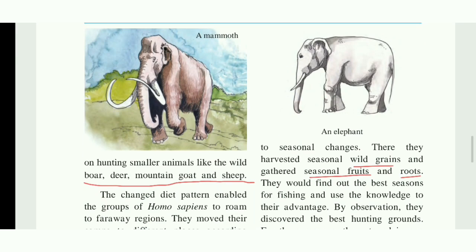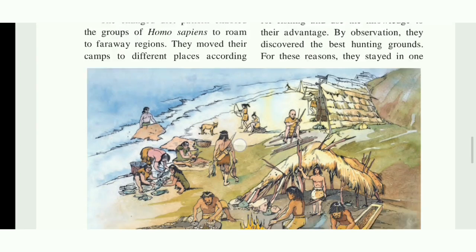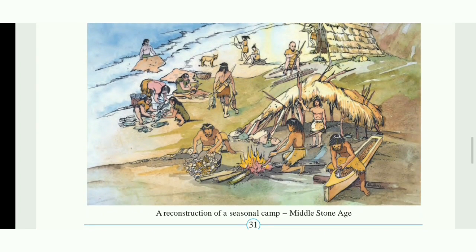They harvested wild grains, gathered seasonal fruits and roots, undertook fishing and hunting, and thereby stayed for longer periods at a place. In this way, they established camps all over the world. You can see a seasonal camp established by homo sapiens in the middle stone age.